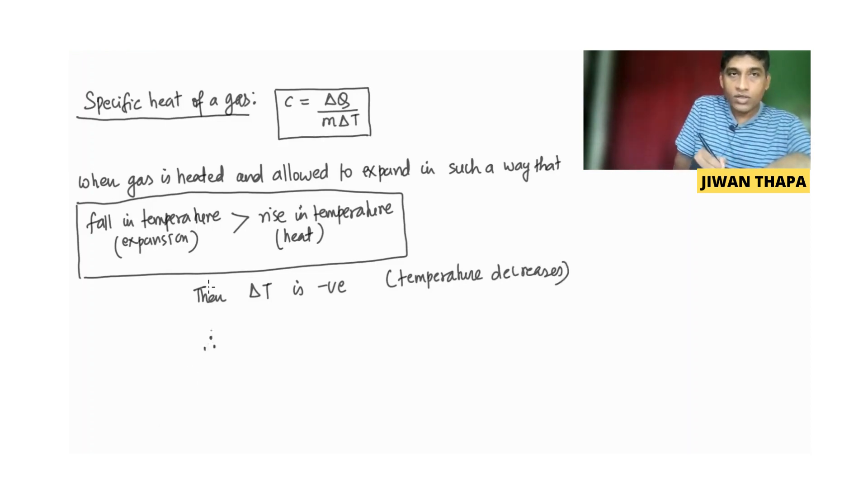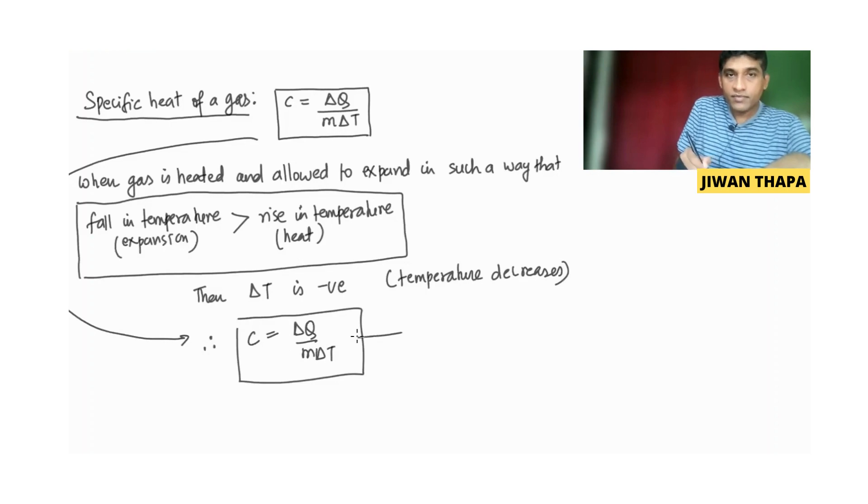Therefore, specific heat, we can write C equals delta Q by M delta T. So, the specific heat is negative.